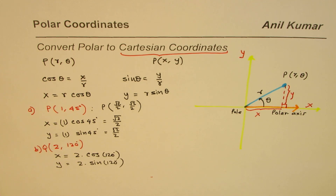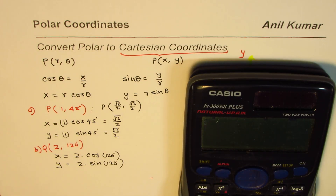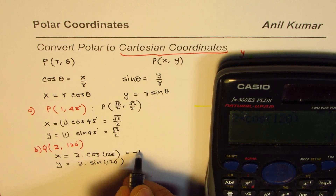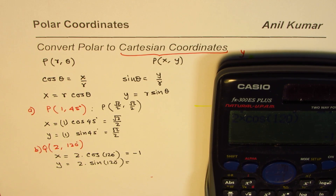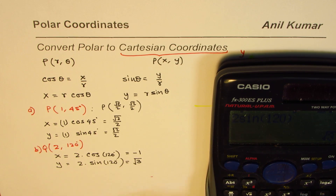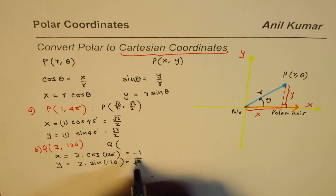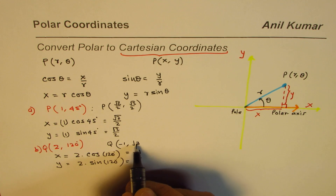You can use a calculator to compute these. Cos of 120° equals negative one-half, so 2 times cos 120° gives you a value of negative 1. As for the y value, 2 times sine of 120° gives you square root of 3. So point Q is written as (-1, √3).